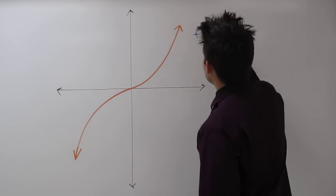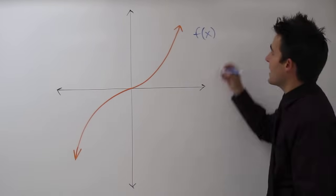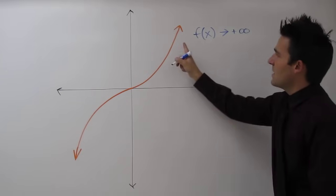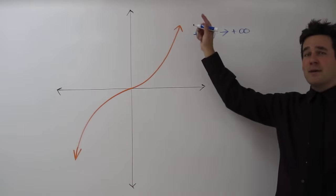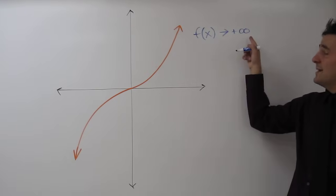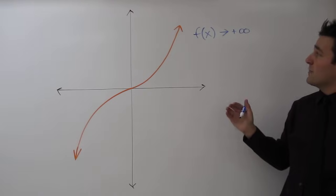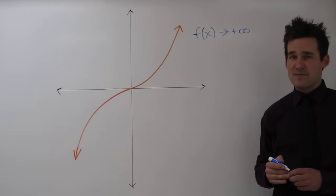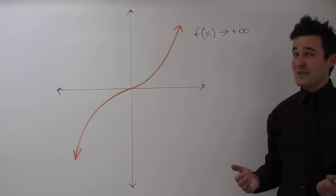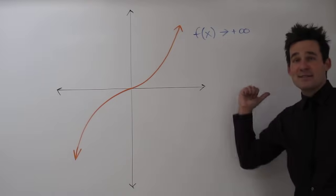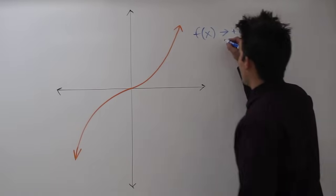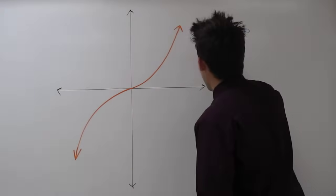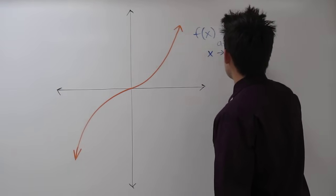We say that the function, or f of x, approaches positive infinity. We know that because it's going up — up, up so high that it keeps getting bigger and bigger. So in math, we say f of x approaches positive infinity. When is it approaching positive infinity? It's approaching positive infinity as x is increasing. So we say the function approaches positive infinity as x approaches positive infinity.